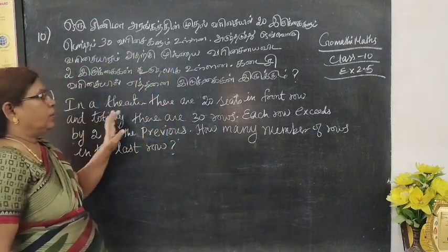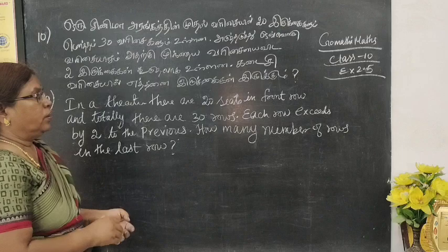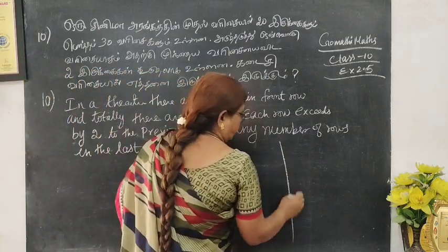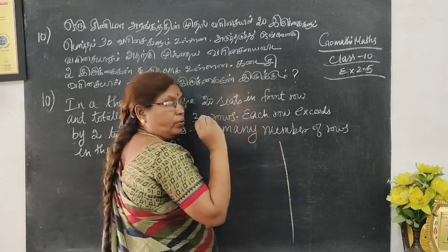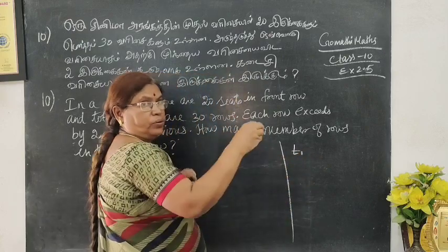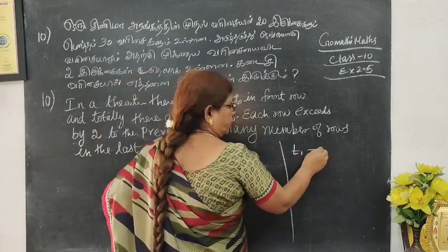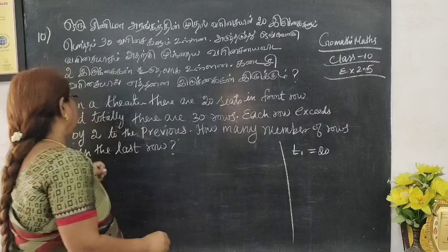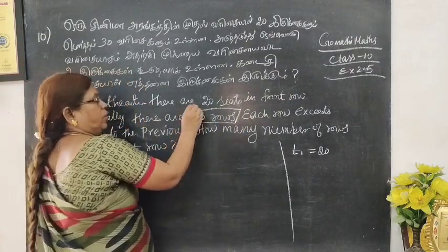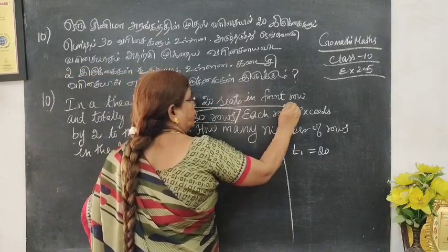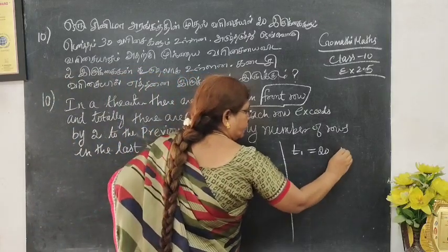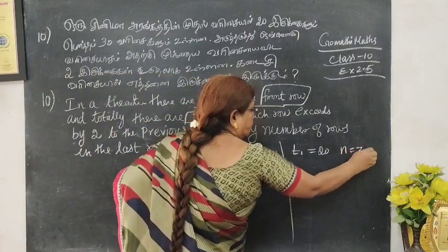There are 20 seats in front row and there are 30 rows. So the value is n equals 30.